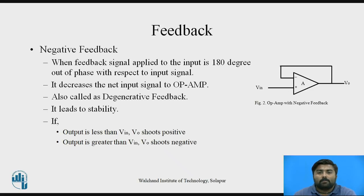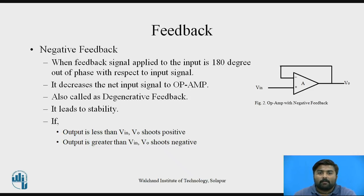First, negative feedback. Figure 2 shows an op-amp with negative feedback. Here, V1 is applied as input to the positive terminal of the op-amp, and VO is the output of the op-amp. The output of the op-amp is again taken as feedback and connected to the non-inverting terminal of the op-amp. When the feedback signal applied to the input is 180 degrees out of phase with respect to the input signal, it is called negative feedback. Because of the 180-degree phase difference, it decreases the net input signal to the op-amp, which is why it is called a degenerative feedback amplifier. This decreasing of the net input signal due to negative feedback leads to stability.